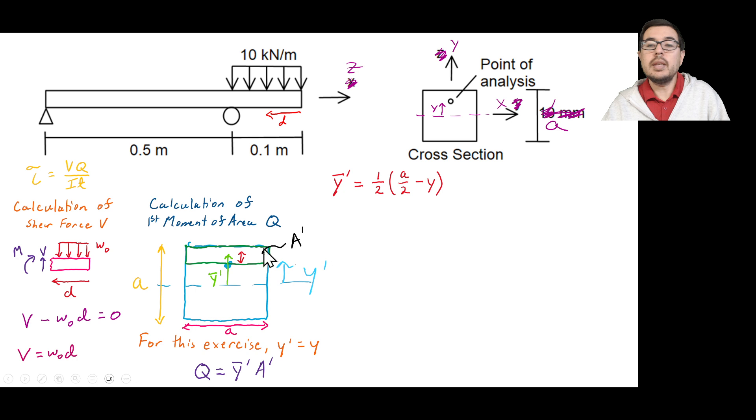And that is going to be halved. That will give us this halfway up distance between, say, this point of analysis and the centroid. But we need to know the entire distance, y bar prime, to the neutral axis. So we just add the y or the y prime.